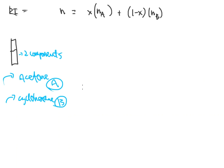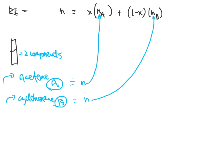You've already done some background work and have refractive indexes for the pure compounds. If acetone is labeled A, its refractive index goes in for A; if cyclohexane is labeled B, its refractive index goes in for B. Later in the fractionation, once all the acetone has come over, the two-component system becomes cyclohexane and toluene. You can call those A and B — it doesn't really matter — but you need to label them to keep them straight.